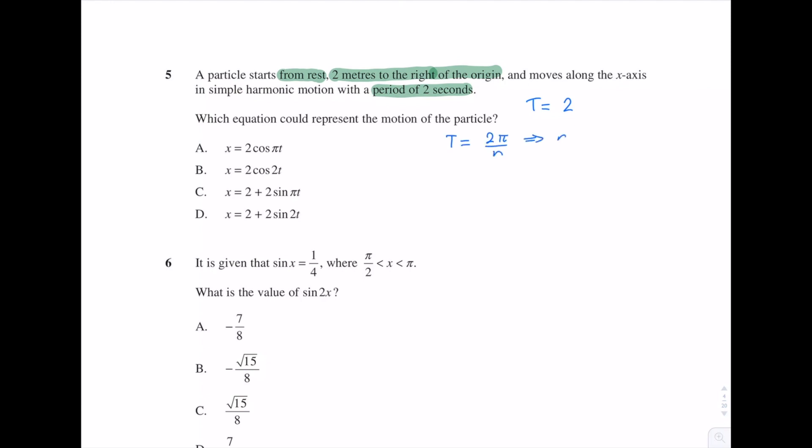Now what do we know? We know that T is equal to 2π/n, which means that n is equal to 2π/T. And since T is equal to 2, that means we have 2π/2, which equals π. So that's going to eliminate options B and D.